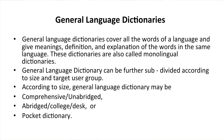General language dictionaries cover all the words of a language and give meanings, definitions, and explanations of words in the same language. These dictionaries are also called monolingual dictionaries. General language dictionaries can be further subdivided according to size and target user group. According to size, general language dictionaries may be comprehensive, unabridged, average, college desk, or pocket dictionary.